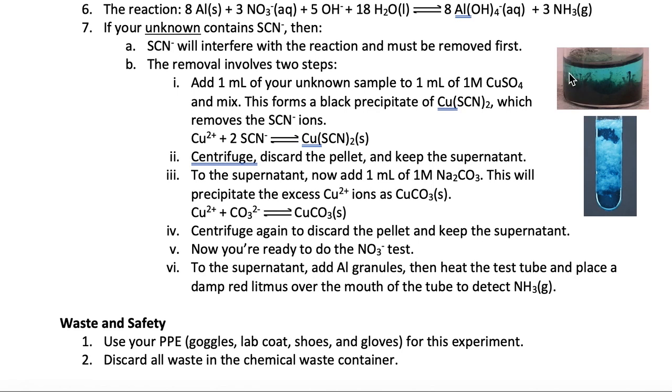Now, since you have excess copper in the solution, you're going to have to remove the copper by adding sodium carbonate. The copper and the carbonate combine to form copper carbonate, which is a solid as shown here. You then centrifuge this test tube once more to remove the pellet. Now you can test the supernatant for nitrate ion.